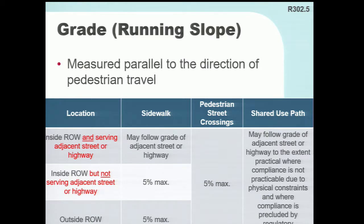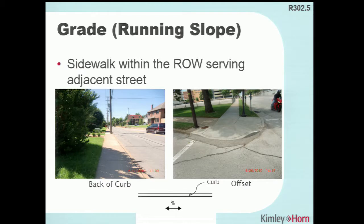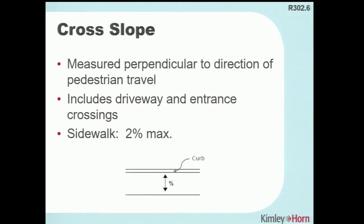The maximum in the 2010 standards is five percent running slope. For those unsure about following ProAG, this is one compelling reason to do so: if any sidewalk exceeds five percent in the public right-of-way, you'd technically be required to install handrails and create ramps — which was never the intent in the public right-of-way. Both examples shown are sidewalks within the public right-of-way: one on the back of curb, one offset, and both are allowed to follow the grade of the adjacent roadway.